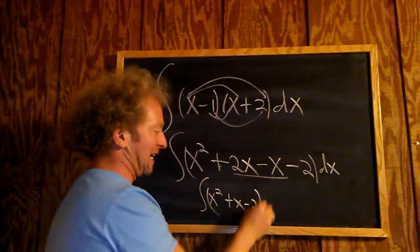And then we have the minus 2. So minus 2, that's dx.